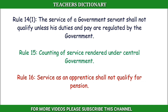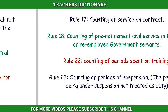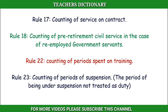Rule 15: Counting of service rendered under Central Government. Rule 16: Service as an apprentice shall not qualify for pension. Rule 17: Counting of service on contract. Rule 18: Counting of pre-retirement civil service in the case of re-employed government servants.